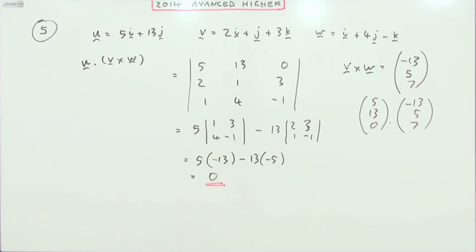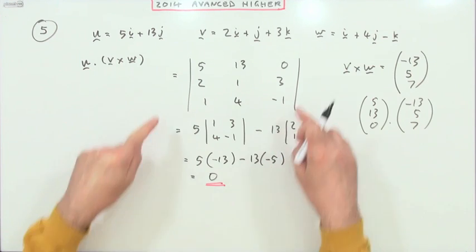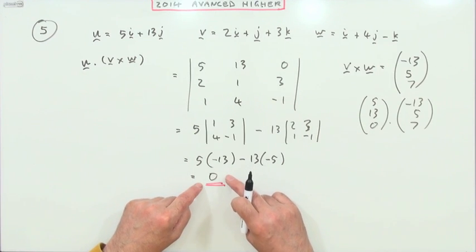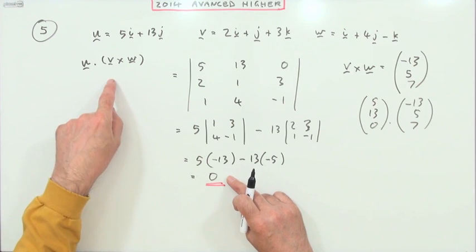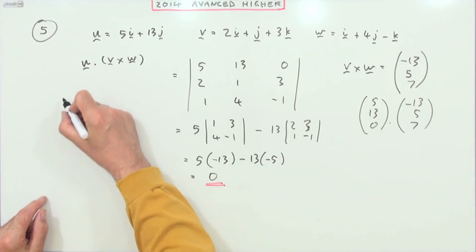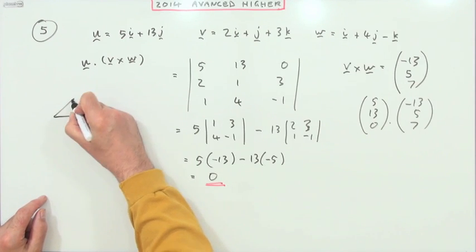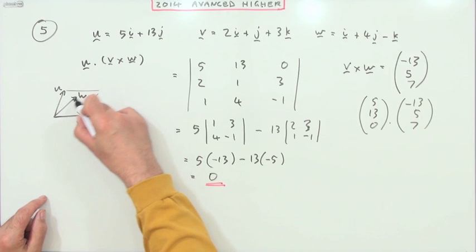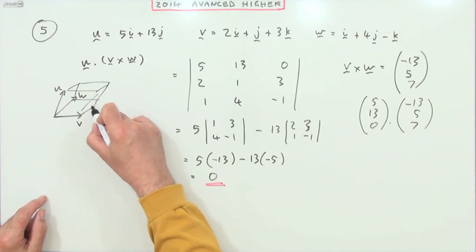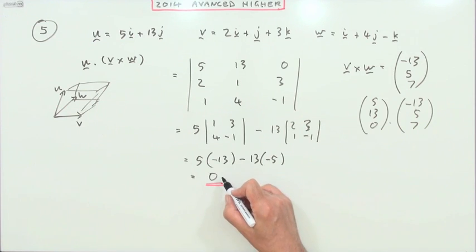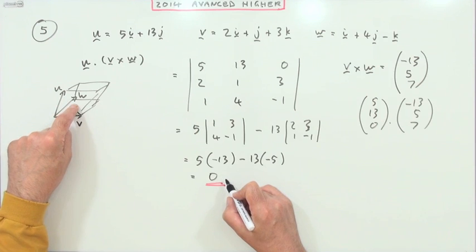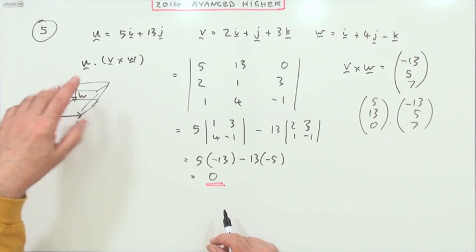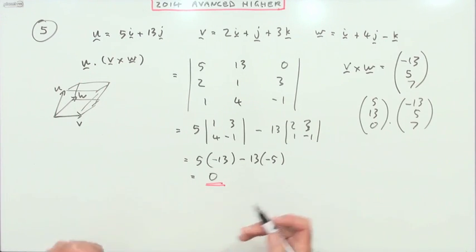Interpret your result geometrically. There's all sorts of things you could say. You could say that this here, this scalar, this is just a single number here, this scalar represents the volume of the parallelepiped formed by those three vectors, by v, w, and u. If you continue that to form a squinty rectangle, sorry cuboid, a parallelepiped, well if the volume is zero that parallelepiped must be degenerate. In other words it must just be lying flat out.